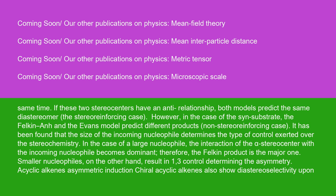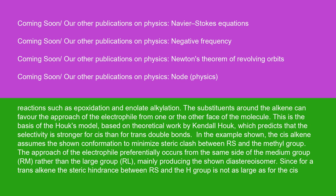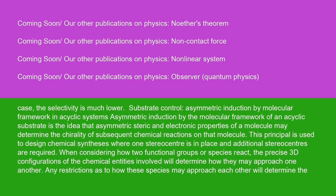Acyclic alkenes asymmetric induction: chiral acyclic alkenes also show diastereoselectivity upon reactions such as epoxidation and enolate alkylation. The substituents around the alkene can favor the approach of the electrophile from one or the other face of the molecule. This is the basis of Houk's model, based on theoretical work by Kendall Houk, which predicts that the selectivity is stronger for cis than for trans double bonds. In the example shown, the cis alkene assumes the shown conformation to minimize steric clash between RS and the methyl group. The approach of the electrophile preferentially occurs from the same side as the medium group rather than the large group RL, mainly producing the shown diastereoisomer. Since for a trans alkene the steric hindrance between RS and the H group is not as large as for the cis case, the selectivity is much lower.